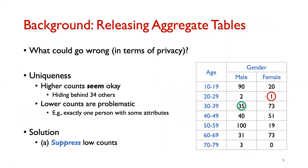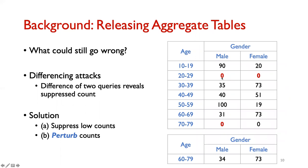We can't simply release aggregated tables because of privacy concerns. The first concern is uniqueness: if a count is high, the person with those attributes is hiding behind many others. But unique counts are problematic because they could lead to re-identification. The solution is to suppress low counts, replacing them with zero. However, someone looking at this data would not be able to distinguish suppressed zeros from original zeros.